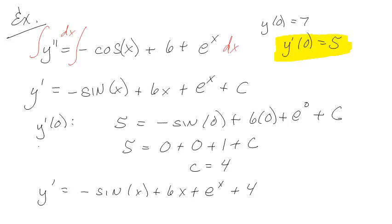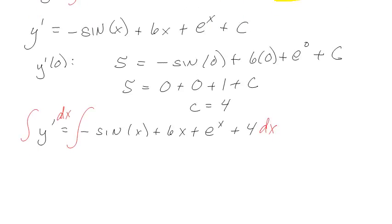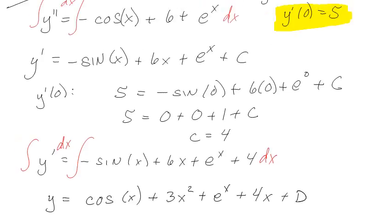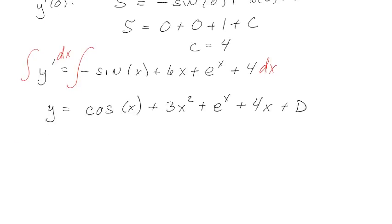Okay, so that means that y prime is equal to negative sine x plus 6x plus e to the x plus 4. Now if you didn't get this far, pause it and see if you can get the rest of the way. So let's integrate it again. Wait, my color. It's critical that we have color matching. Integrate, integrate, integrate, integrate. And on the left I have y equals cosine x.